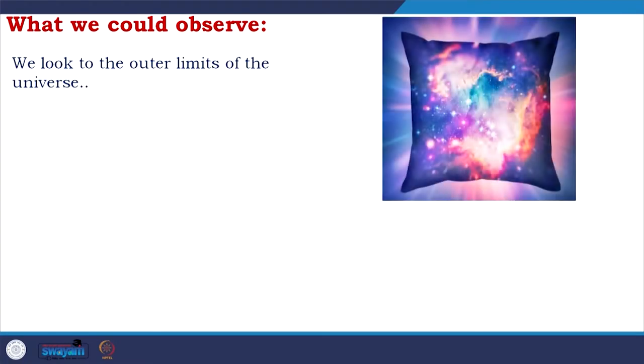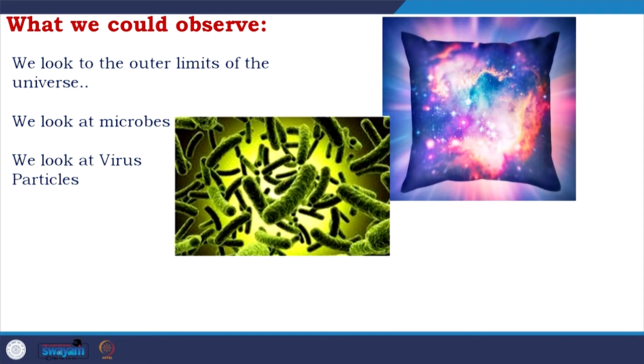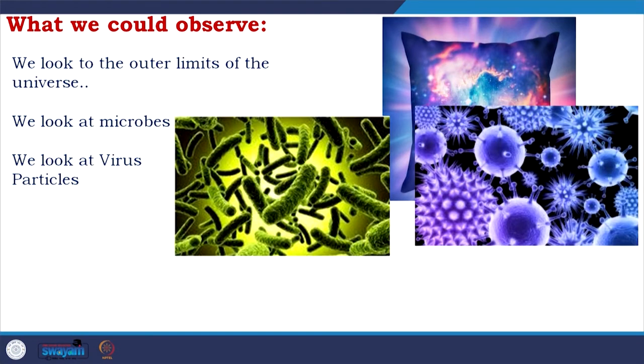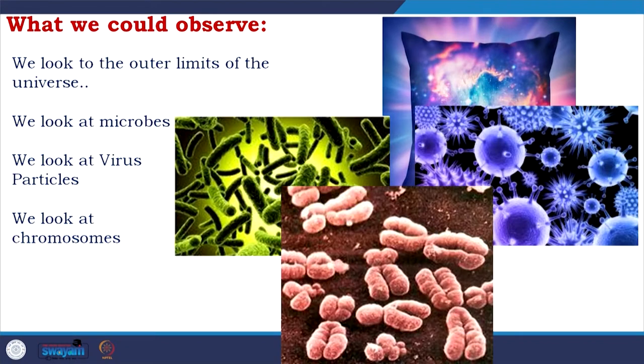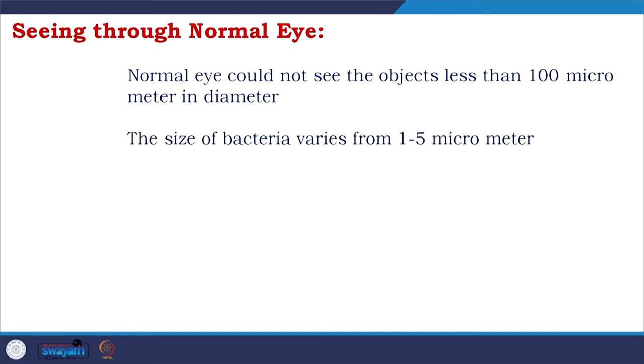Looking at what we can observe — from the outer limits of the universe to microbes, bacteria, viruses, and chromosomes — some of these are at the limits of normal eye visibility. The normal eye cannot see objects less than 100 micrometers in diameter. The size of bacteria varies from 1 to 5 micrometers, while viruses range from 25 to 350 nanometers.